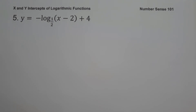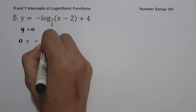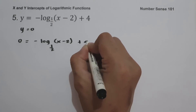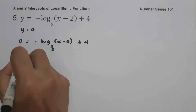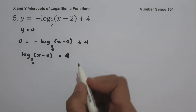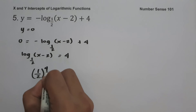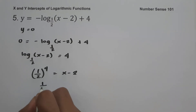On our last example: y equals negative log(x − 2) base one-half plus 4. To find the value of the x-intercept, let us set y equal to 0. So we have 0 equals negative log(x − 2) base one-half plus 4. To eliminate the negative sign, let us move it to the other side: log(x − 2) base one-half equals 4. Let us write this in exponential form: one-half raised to 4 equals x minus 2.